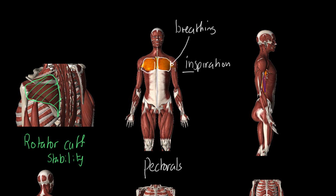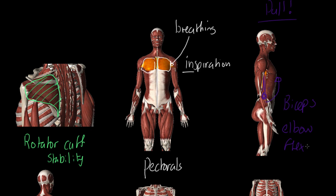The muscle on the front of the upper arm is, of course, our bicep muscle. When this muscle contracts and shortens — remember, all muscles can do is pull — when this muscle pulls, it makes the elbow flex. So we get elbow flexion from this muscle.